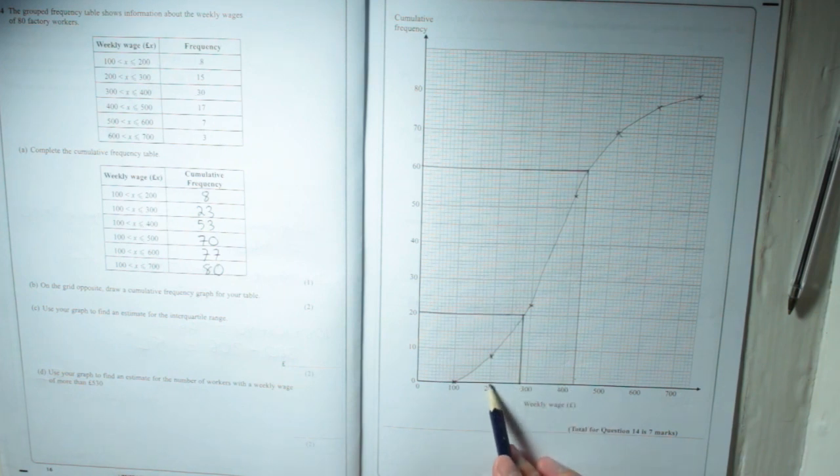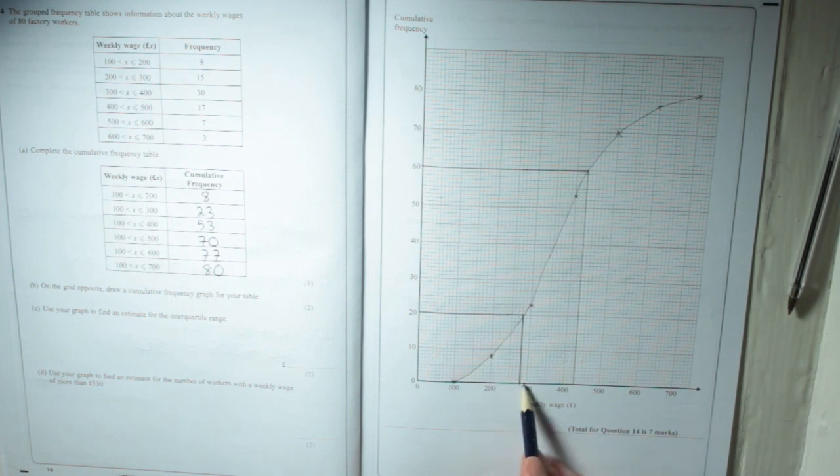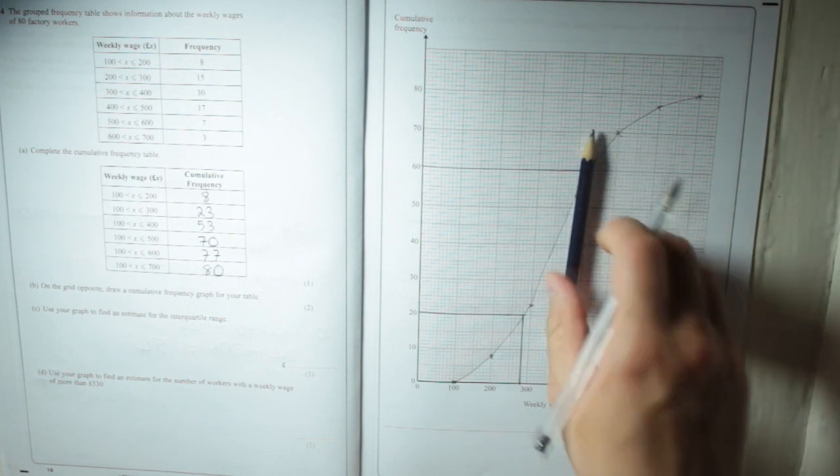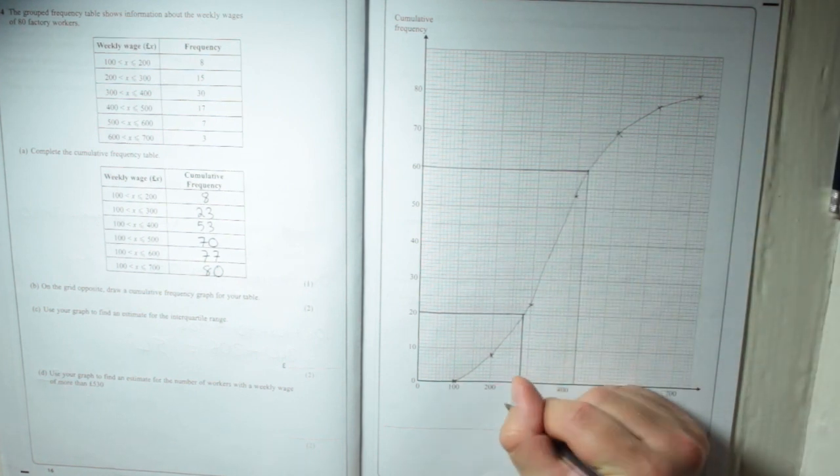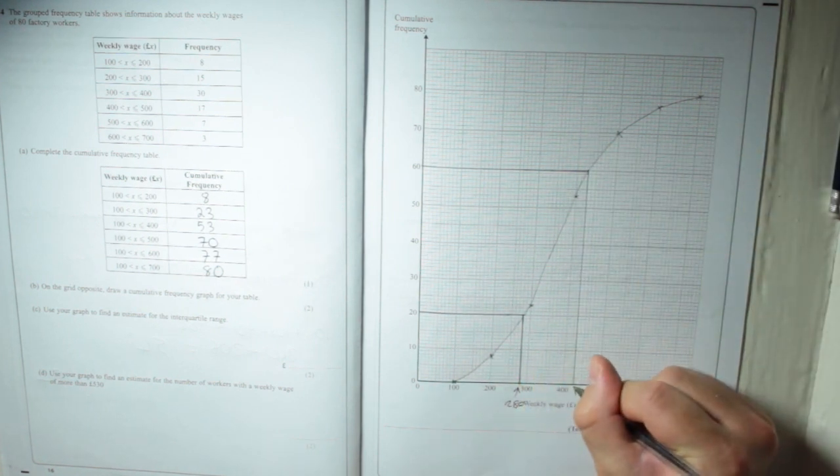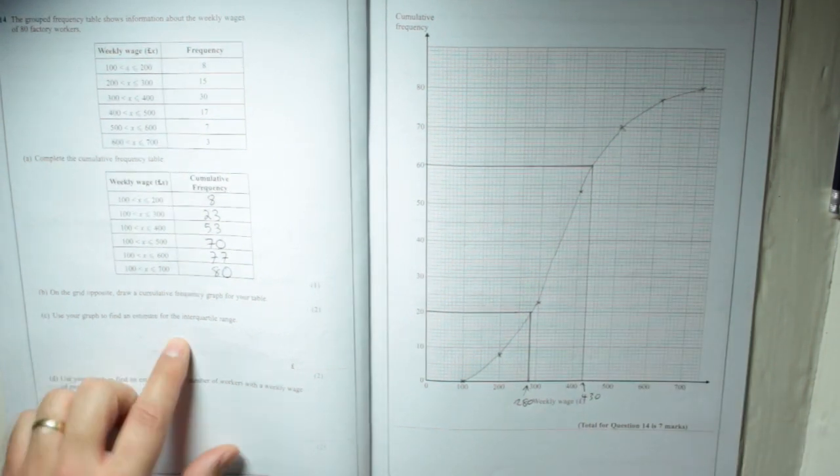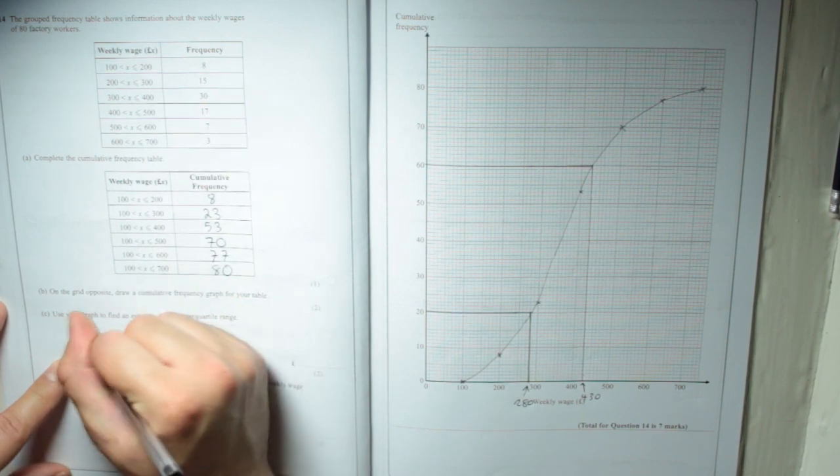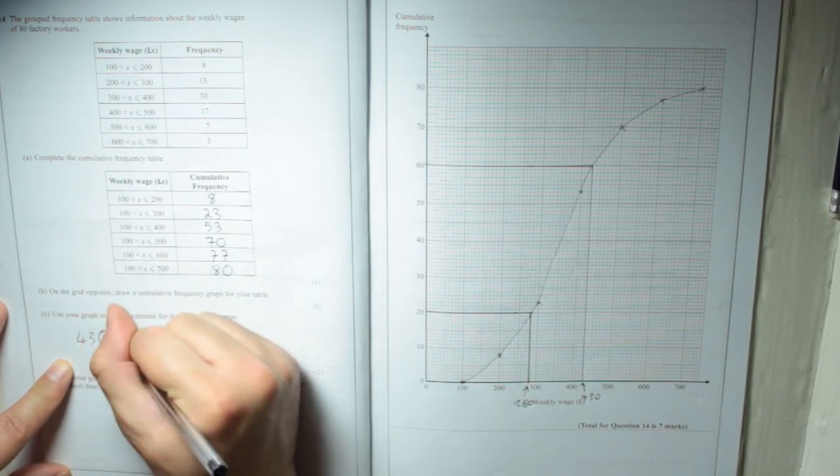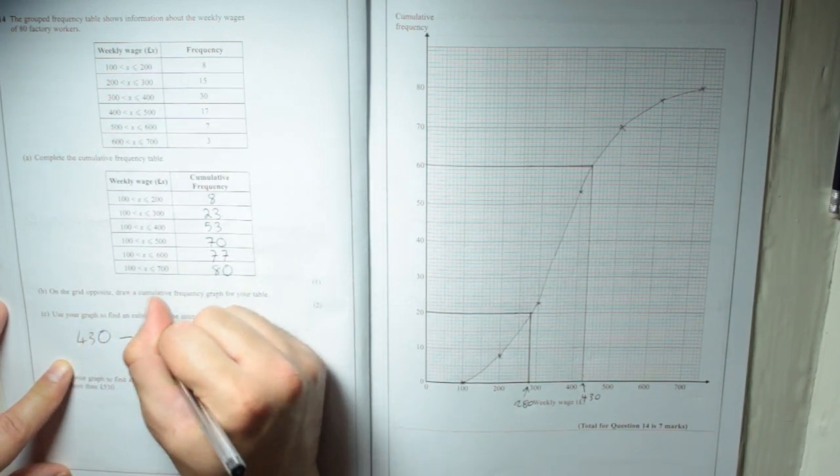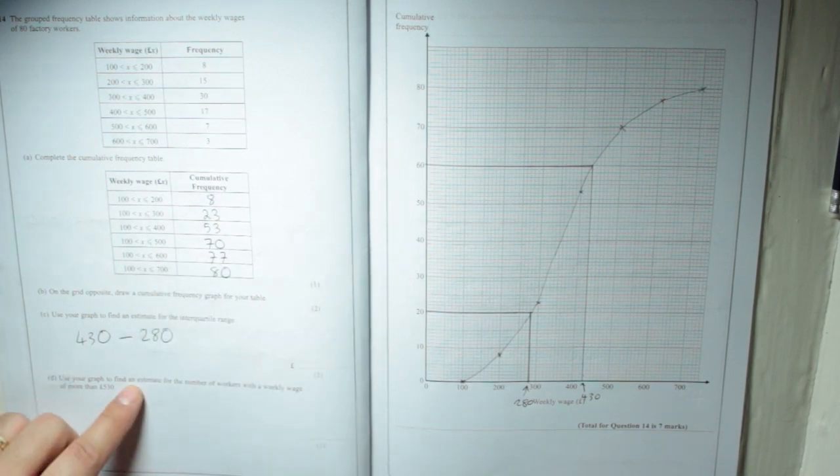So, there was 200 to 310 little squares, so every square is 10. Again, that's two away from 300, so that's 280, and that one here is 430. So, the interquartile range estimate is going to be 430 take away 280, which is 150.